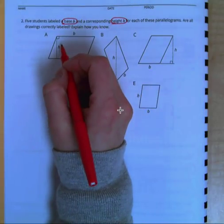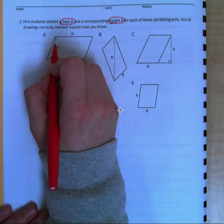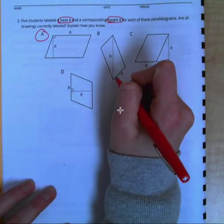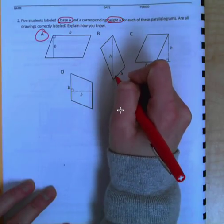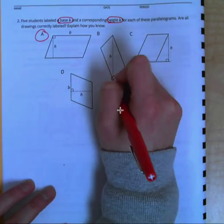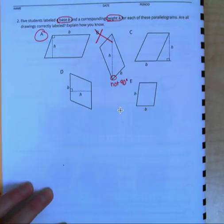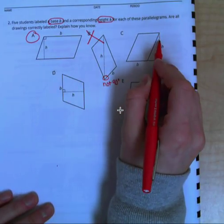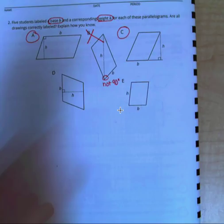If we look at A, we have our base is a side of our parallelogram, our height is drawn at a 90-degree angle, so A is correct. B, our base is a side of our parallelogram, so that is good. But our height is not at a 90-degree angle here. So this is not 90 degrees, so B is not an accurate way to label the base and height. Look at C. A base is a side of our parallelogram. Our height is drawn outside, but we know that's okay because it still meets at a 90-degree angle. So C would be a correct example.